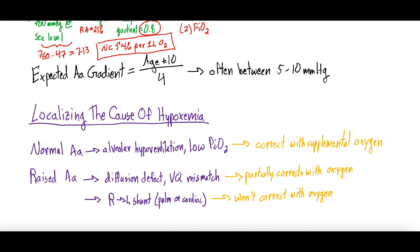The expected AA gradient is calculated as: age plus 10, divided by 4. So if you're 50 years old, that's 60 divided by 4 — which is 15. If you're 30, it's 40 divided by 4, which is 10. It's typically between 5 and 10, but you can use this age-based formula to get the expected value.